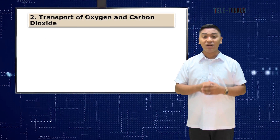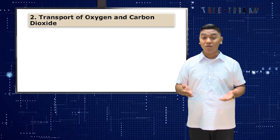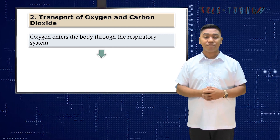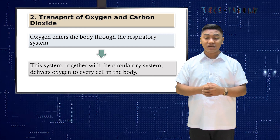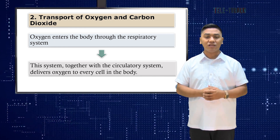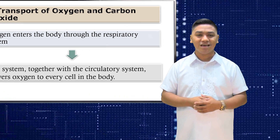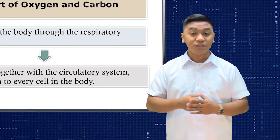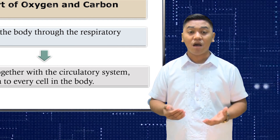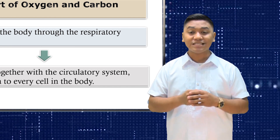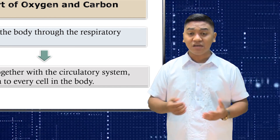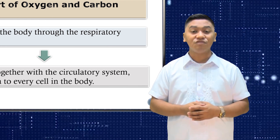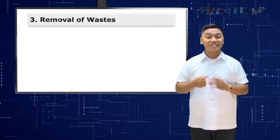Second is the transport of oxygen and carbon dioxide. Oxygen enters the body through the respiratory system. This system, together with the circulatory system, delivers oxygen to every cell in the body. As you inhale, the oxygen goes directly into the lungs, specifically in the alveoli where there are capillaries that serve as sites of gas exchange. The capillaries connect to larger blood vessels that transport oxygen to the rest of the body.